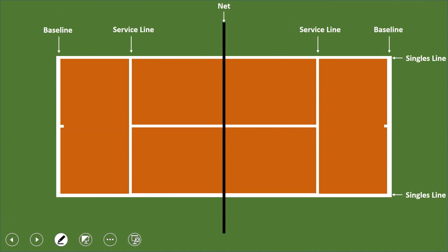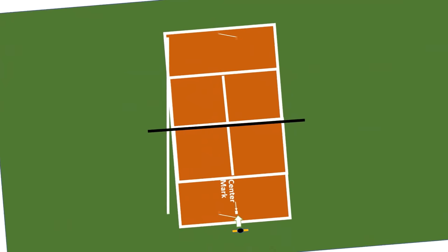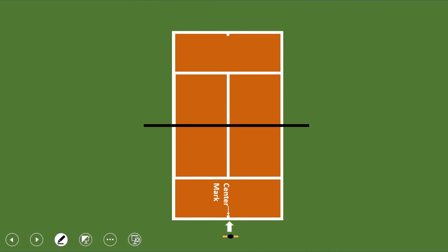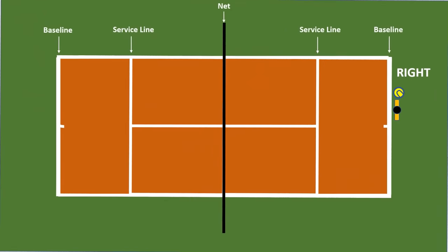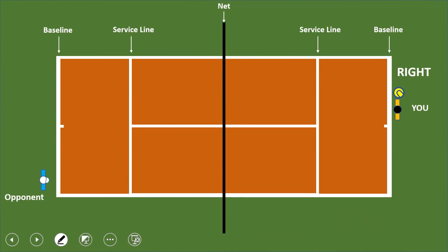We're going to talk about tennis singles and then extrapolate to doubles. There is a center mark — if you rotate to face the net, the center mark divides the court into right-hand side and left-hand side. Every time you start a game, you stand to the right-hand side of the center mark. Every point in tennis starts with a serve, so you serve while standing on the right-hand side of the center mark and behind the baseline.